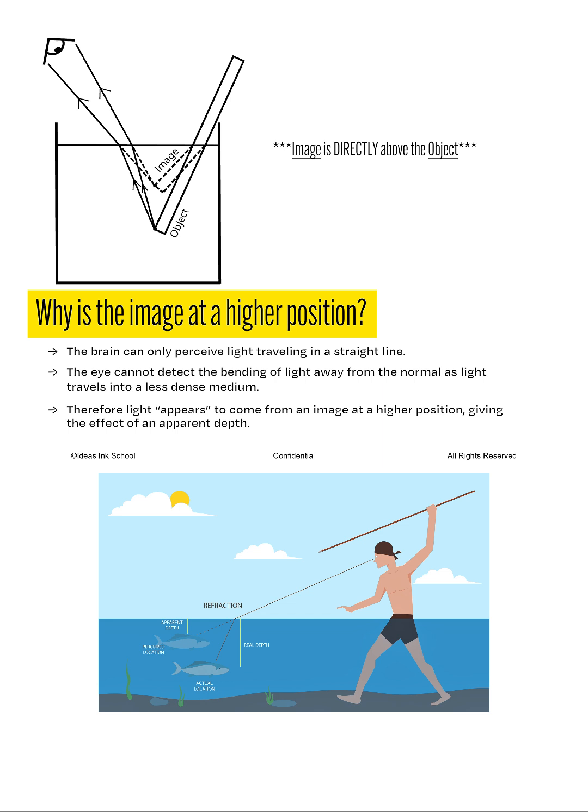But why does the image always appear to be in a higher position than the actual object? That is because our brains can only perceive light entering into our eyes in a straight line. Our eyes are unable to detect the bending of light due to it traveling from a denser to a less dense medium. As a result, light rays will appear to come from an image that is located above the object.